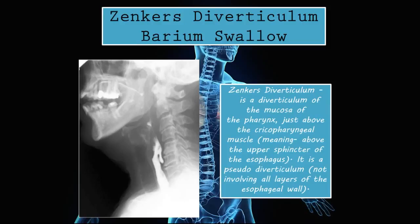Zenker's diverticulum on barium swallow. A Zenker's diverticulum is a diverticulum of the mucosa of the pharynx just above the cricopharyngeal muscle, meaning above the upper sphincter of the esophagus. It is a pseudo-diverticulum because it does not involve all the layers of the esophageal wall. On the barium swallow test you can see that the smooth hollow pipe is not very smooth at all because it has this pouch that has developed — a hypopharyngeal pouch — which is called Zenker's diverticulum.